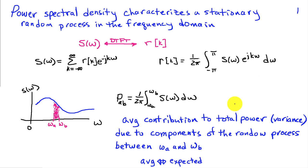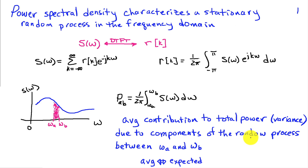In terms of interpretation, if we integrate the power spectral density over an interval from omega a to omega b — as depicted in the graph — and normalize by 2 pi, that quantity is the average or expected contribution to the total power or variance due to the components of the random process between omega a and omega b. So it tells us how the contributions of power are distributed in frequency.